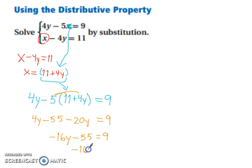We combine like terms. We have negative 16y minus 55 equals 9. Now we can add 55 to both sides. So we've got negative 16y equals 64. So y must equal negative 4.